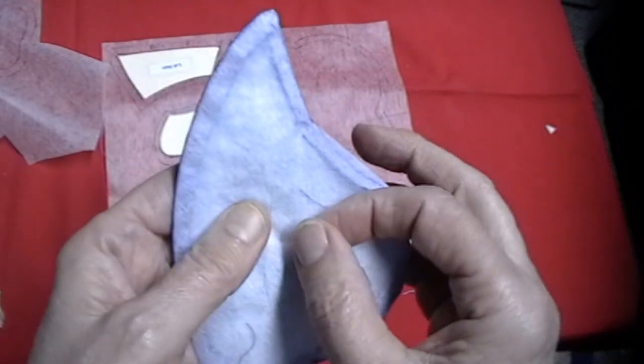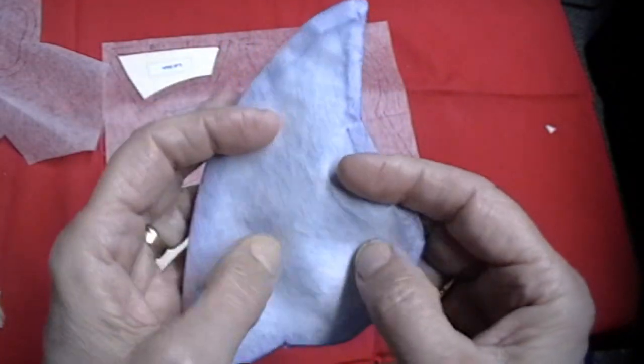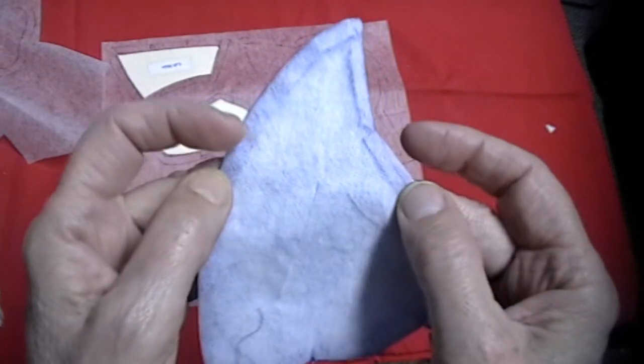When you cut it open you do not want to cut near the edges. You want to stay in the middle to turn it just in case there is a little bit of rip or tear in your interfacing. You don't want it to rip or tear to your edge.